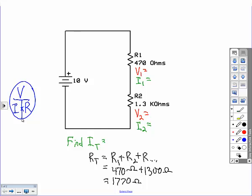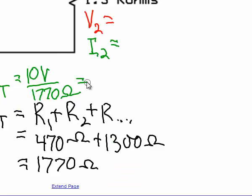Since we know the voltage and we know the resistance, we're looking for the current, so that's voltage divided by resistance. Or in our case, it's going to be 10 volts divided by 1,770 ohms, which is going to equal 5.65 milliamps.